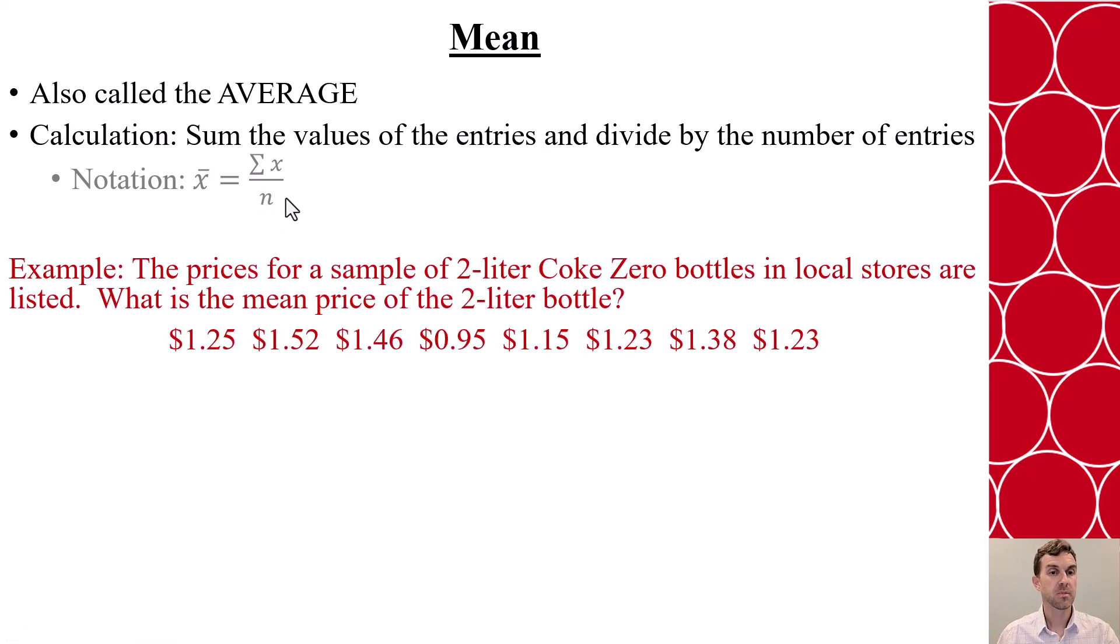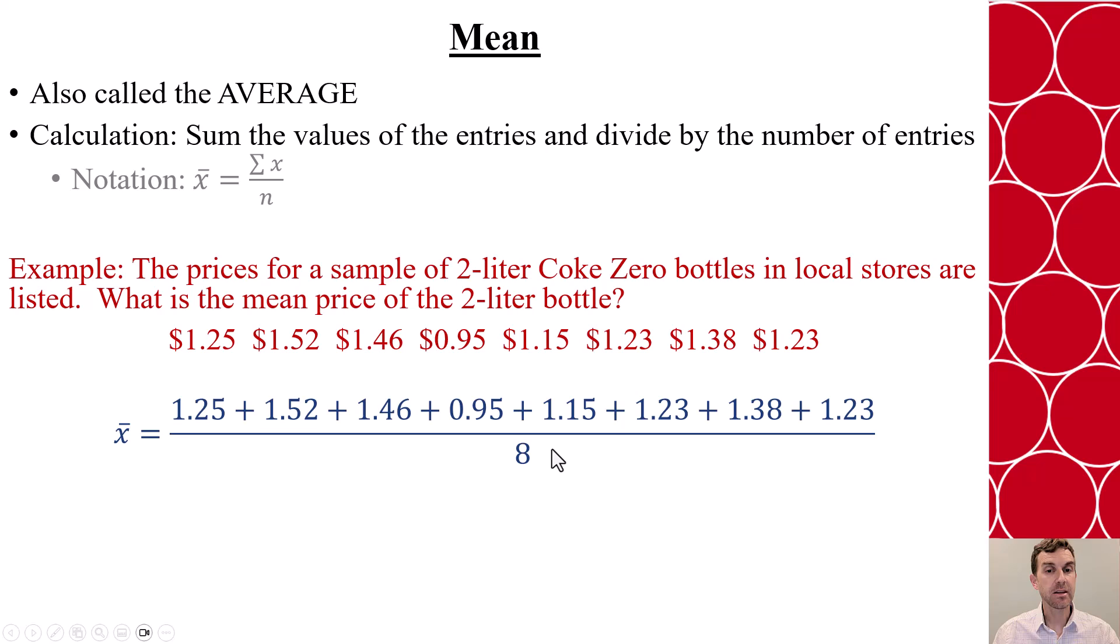Let's look at an example here. Say that we have the prices of two-liter Coke Zero bottles in local stores and here are eight entries, and we want to know what's the mean price or what's our average for these eight bottles. So I add my eight values together and then I divide by eight.